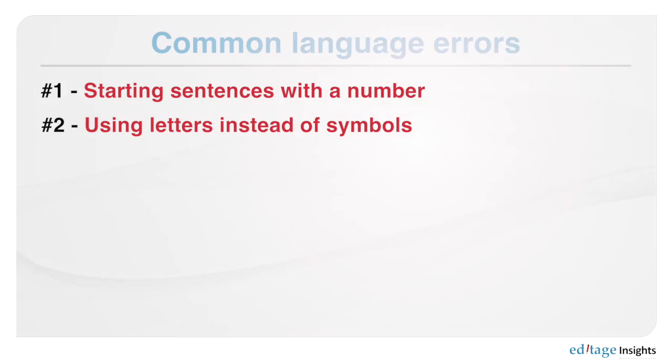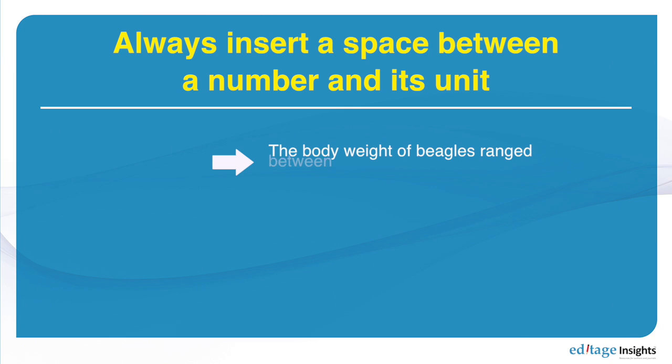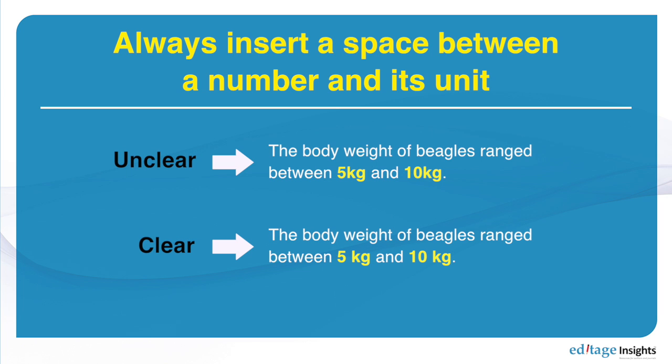Mistake number three deals with differences between English and other languages like Korean, Chinese, and Japanese: there are no spaces between numbers and units. For example, if I say the body weight of beagles ranged between five kilograms and ten kilograms, there needs to be a space between the number and the unit — five space kilograms, ten space kilograms. It's a simple thing, but when a reviewer is reading your paper it doesn't look good. It's easy to fix, but it's a mistake that people commonly make.